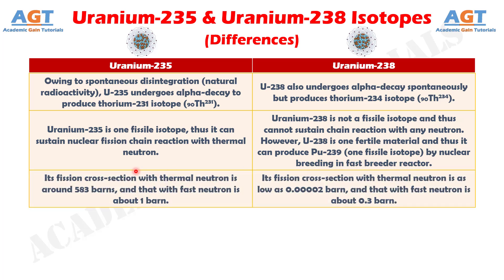Number 8. The fission cross-section of Uranium-235 with thermal neutrons is around 583 barns, and that with fast neutrons is about 1 barn, whereas the fission cross-section of Uranium-238 with thermal neutrons is as low as 0.00002 barns, and that with fast neutrons is about 0.3 barns.